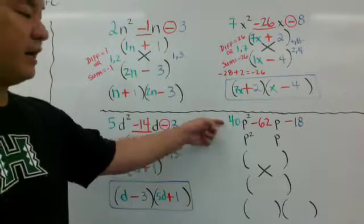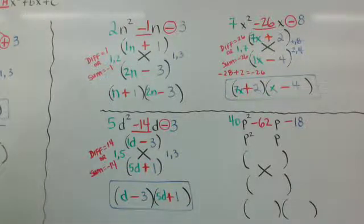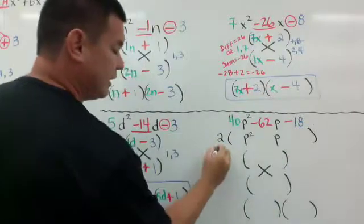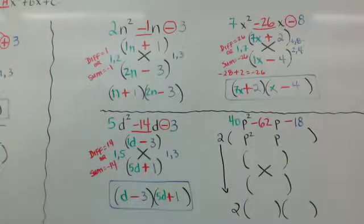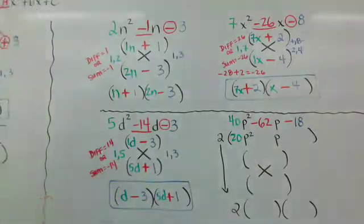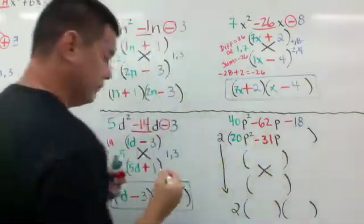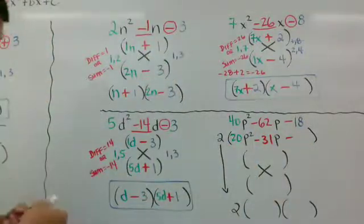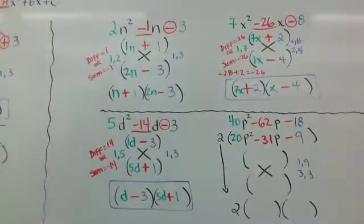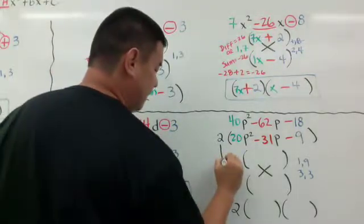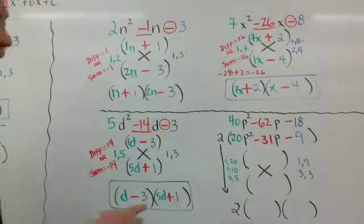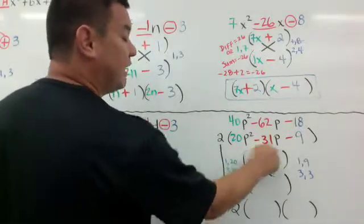Here's the other example where I've got to divide something out. I can see I can pull a 2 out of everything, so I'm going to pull a 2 out and drop it all the way down into my answer so I don't forget it. If I pull a 2 out, I'm going to get 20p squared minus 31p minus 9. I list my factors of 20: 1 and 20, 2 and 10, 4 and 5. I need a sum of negative 31, or a difference of 31.